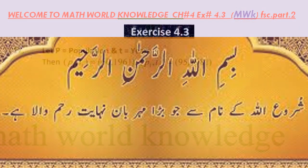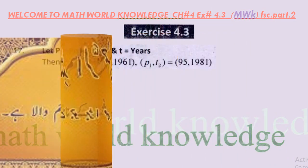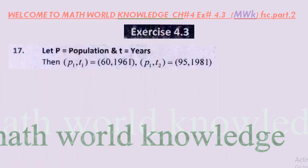Bismillahirrahmanirrahim, Assalamualaikum dear students. Today our topic is FSC part 2 exercise 4.3 question number 17, which is a word problem. The population of Pakistan to the nearest million was 60 million in 1961.